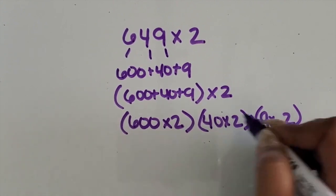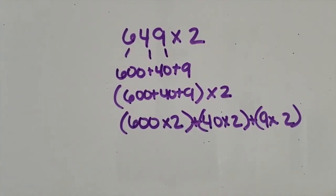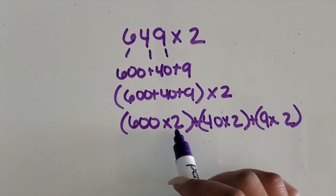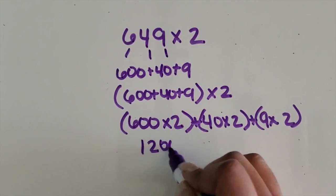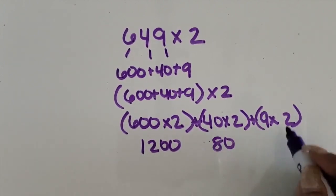We want students to know that they're adding those products back together, very similar to the area model. 600 times 2 is 1,200. 40 times 2 is 80. And 9 times 2 is 18.